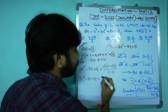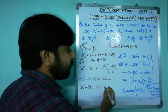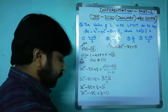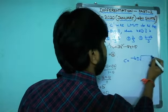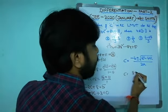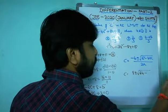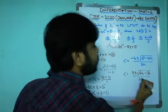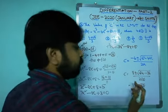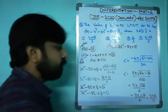So 3c² - 8c + 3 = 0. Using the quadratic formula c = [-b ± √(b²-4ac)] / 2a: c = [8 ± √(64 - 36)] / 6 = [8 ± √28] / 6 = [8 ± 2√7] / 6 = (4 ± √7) / 3.